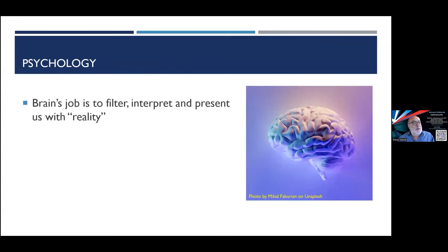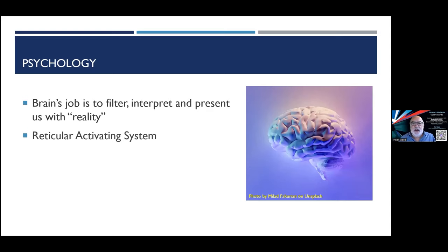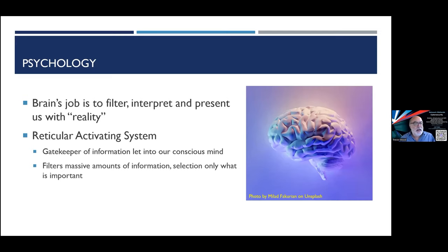Our brain's job is to filter, interpret, and present us with reality. A friend of mine maintains there's always at least one more reality in the room than there are people, because we each have our own. Inside our brain there's the Reticular Activating System, or RAS — a gatekeeper that filters information going into our conscious mind and selects only what's important. But it can be programmed.